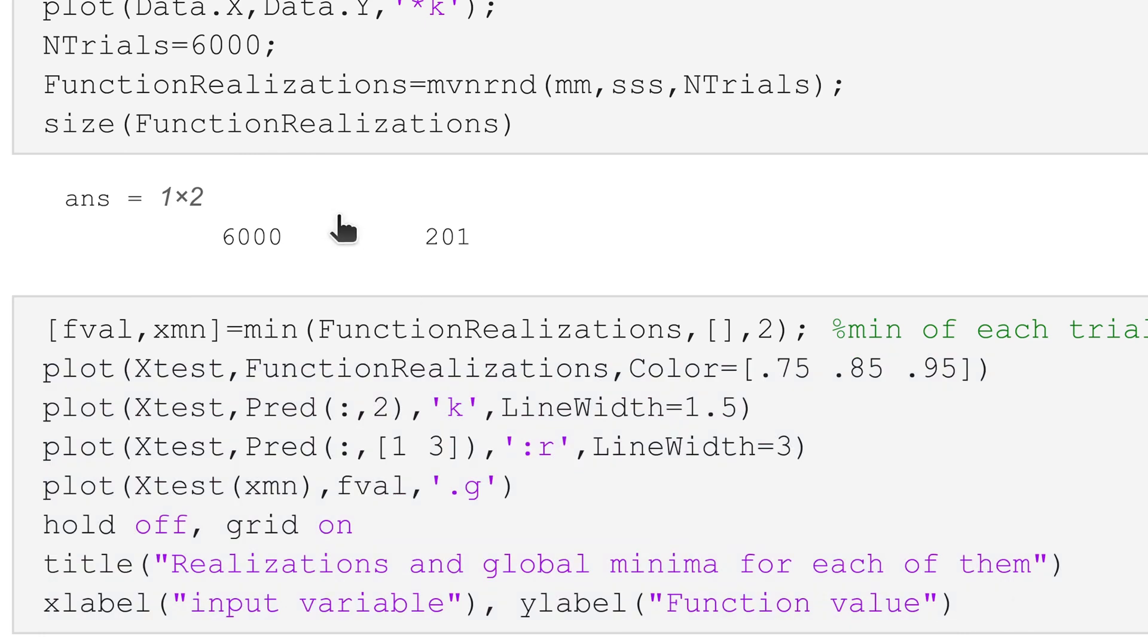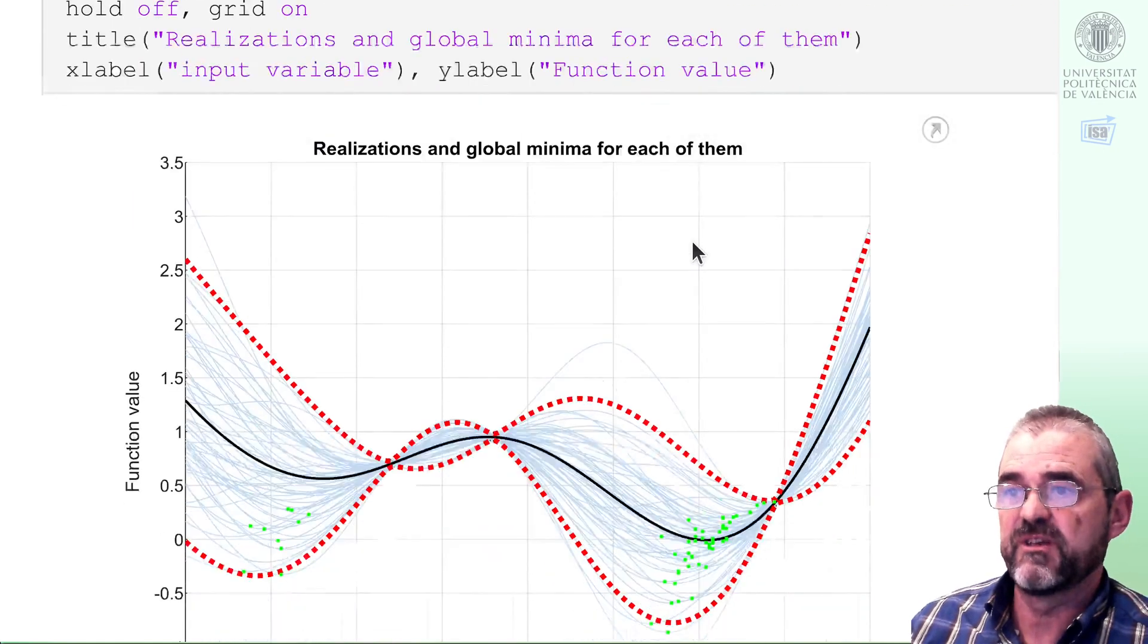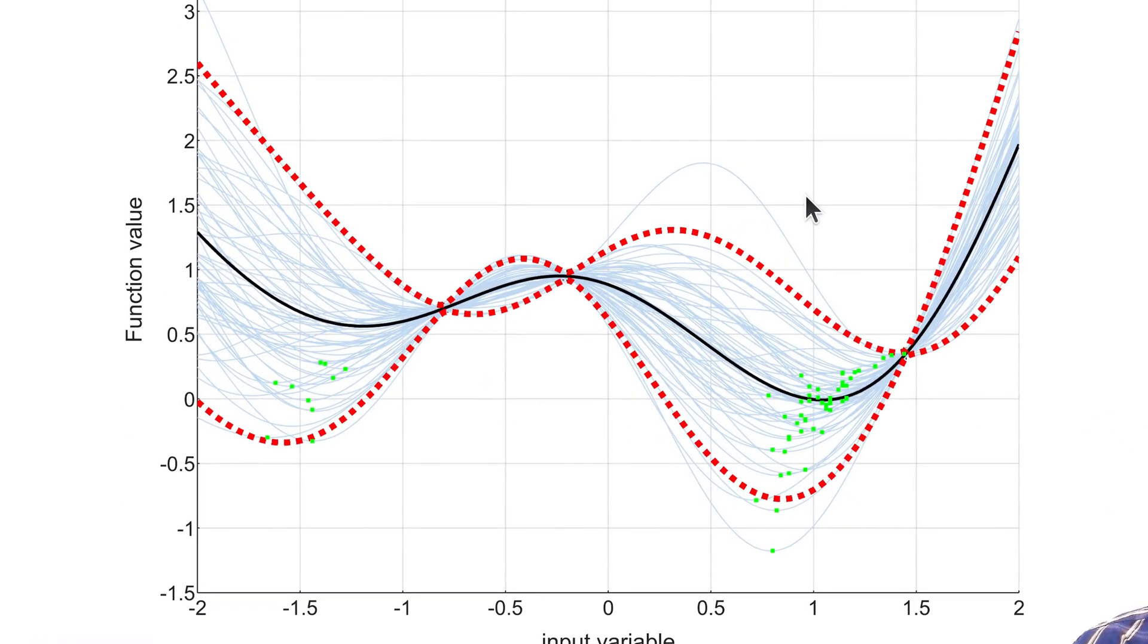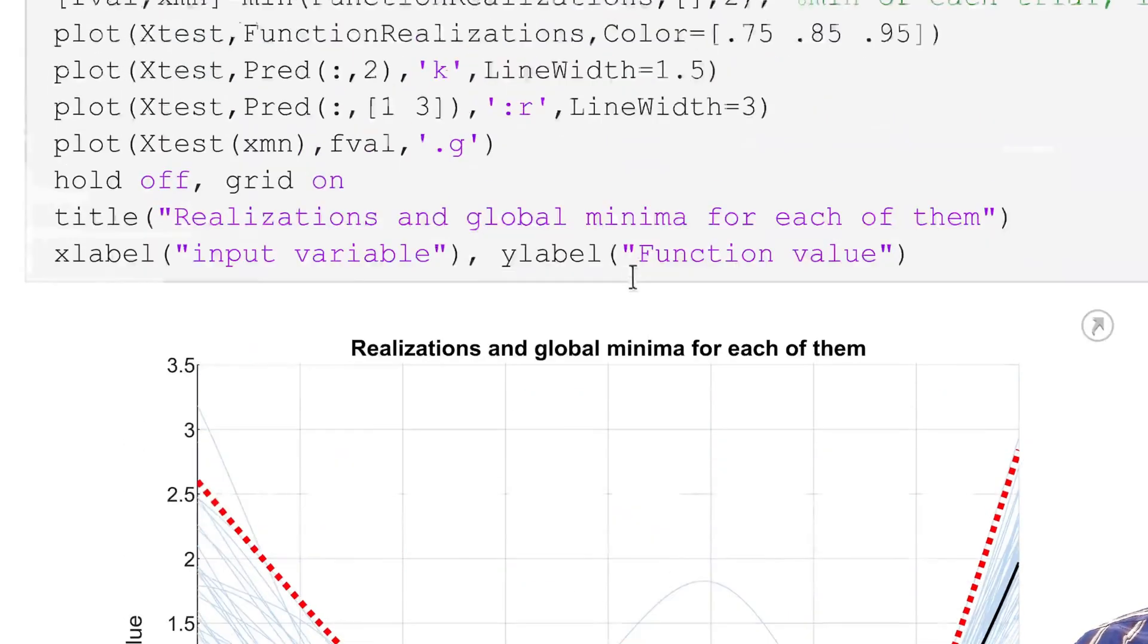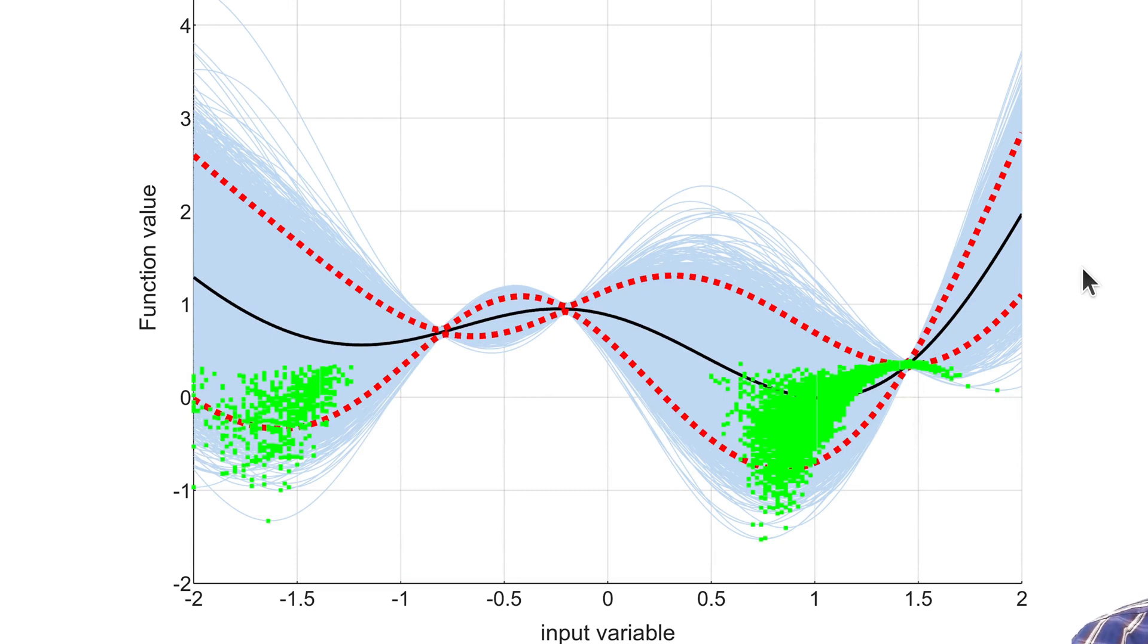So the result, let us first try just with 60 to see that it works, and then 6,000 times. So here we have 60 bluish lines and the green dot at each of the global minimum of the 60 lines. So then if I carry out 6,000 repetitions, here we have the cloud of green dots which indicate where the minimum of all the realizations of this Gaussian process may be. So each realization has one green dot.